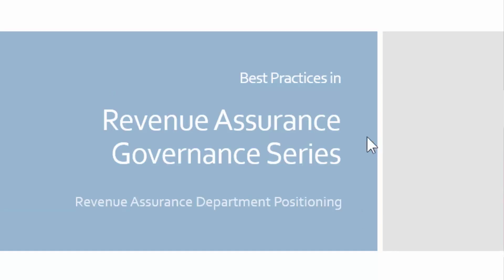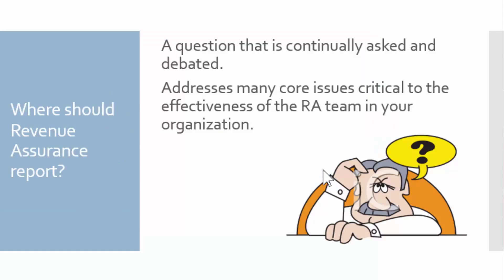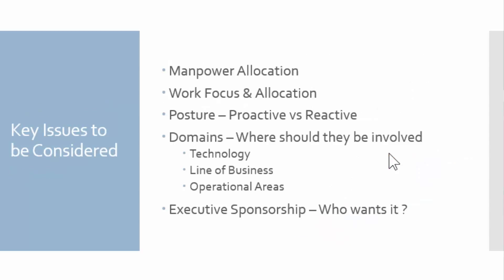Anybody that's been involved in revenue assurance for any amount of time knows that there is an ongoing controversy about where exactly the revenue assurance department should report. It's a question that's continually asked and debated, and it addresses many of the core issues that are critical to the effectiveness of your revenue assurance team. There are six major categories of information identified as the most important things to consider when discussing where to position your revenue assurance department.